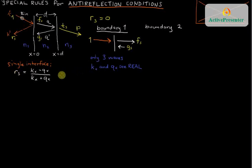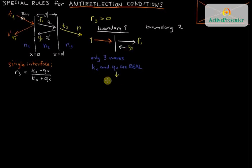And it's a generally true thing. When there are only three waves and KX and QX are real, it means that the two beams here, Fs and Gs, since they both have real coefficients, it means that Fs and Gs are in phase with each other at that boundary.